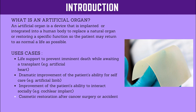Let's see why artificial organs are needed — the use cases. First, life support to prevent imminent death while awaiting a transplant — for example, an artificial heart. If you meet with an accident or due to any disease, a part of the body might fail. In that case, urgently, we cannot wait for a transplant and organ donor. Immediately, artificial organs will be used — they will be replaced in your body and give you a life again.